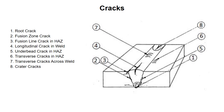Here you can see various locations and nomenclature for cracks. Number one is the root crack. Number two is the fusion zone crack. Number three is the fusion line crack in the HAZ. Number four is the longitudinal crack in the weld. Number five is an under bead crack in the HAZ. Number six is a transverse crack in the HAZ. Number seven is transverse cracks across the weld. And number eight is a crater crack.